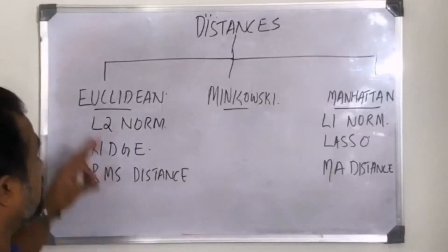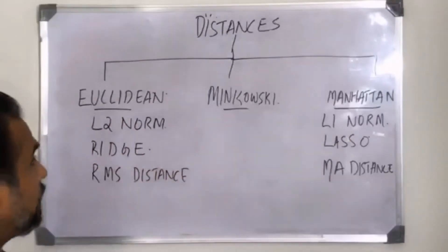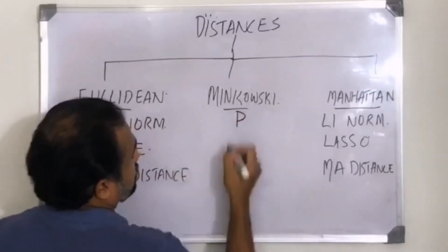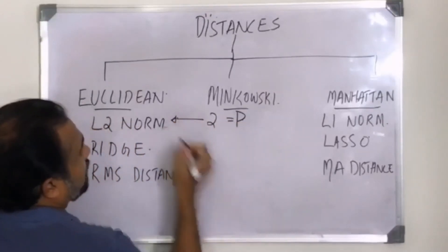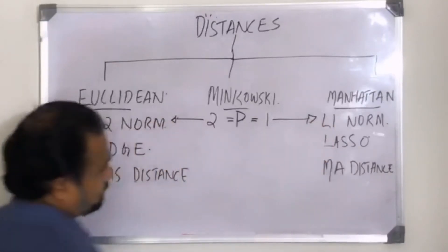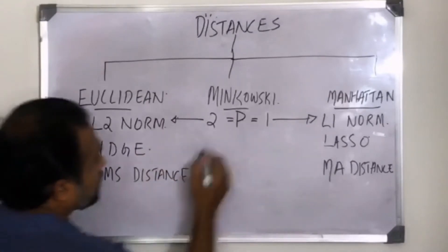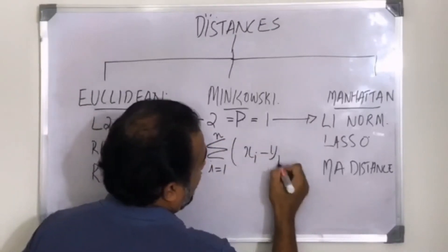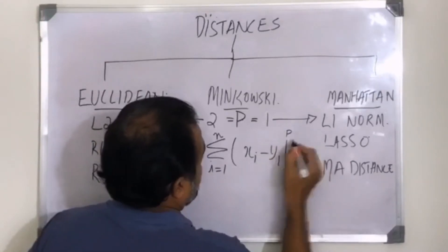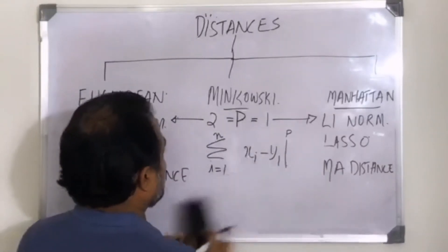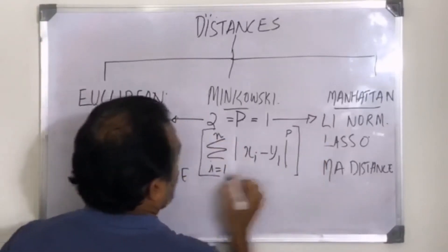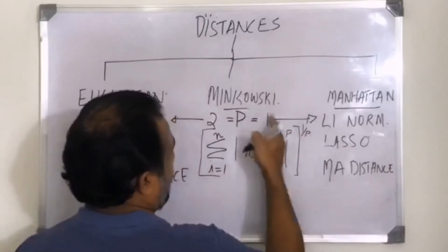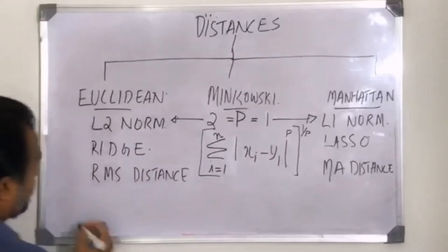Minkowski is actually the generic formula — Euclidean distance and Manhattan distance calculation both use the formula from Minkowski. Minkowski is the parent distance calculation. There is a term in the Minkowski formula called p. When p is equal to 2, that becomes Euclidean, and when p is equal to 1, that becomes Manhattan.